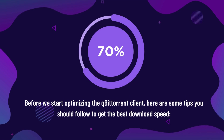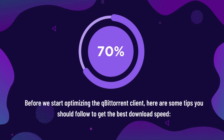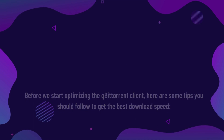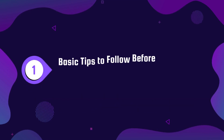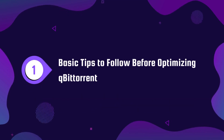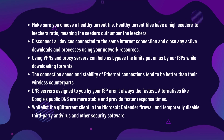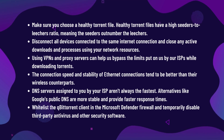Before we start optimizing the qBittorrent client, here are some tips you should follow to get the best download speed. Step number one: basic tips to follow before optimizing qBittorrent. Make sure you choose a healthy torrent file.